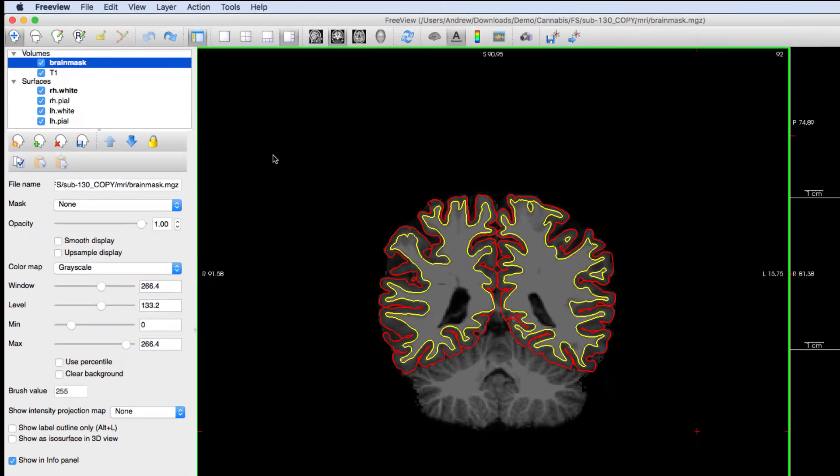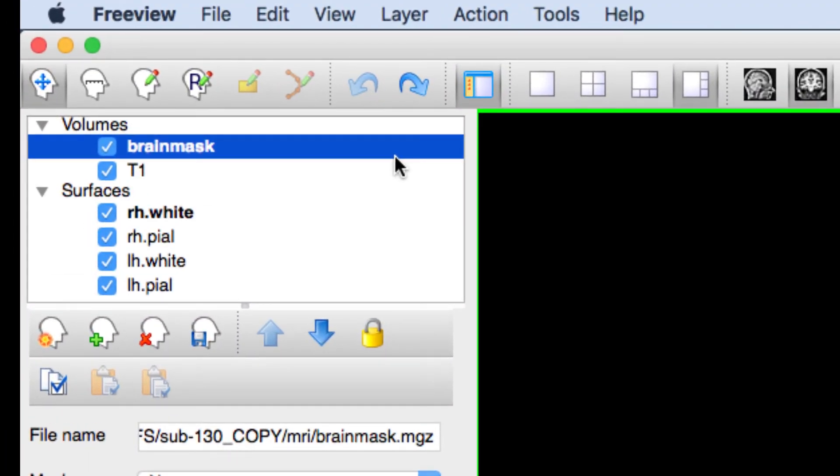First, make sure that brain mask is highlighted, so that our edits will only apply to that image. Then click this button, which enables voxel editing.